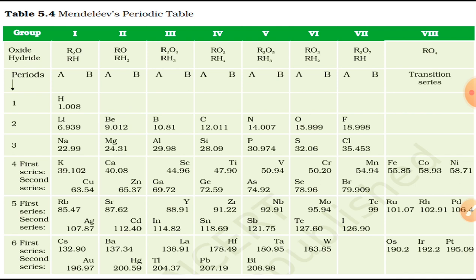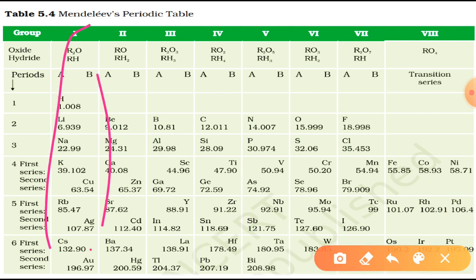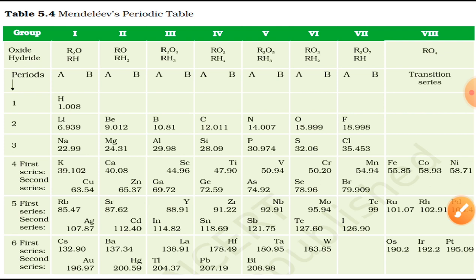He arranged 63 elements in increasing order of their atomic masses and found that there was a periodic reoccurrence of elements with similar physical and chemical properties. He observed that elements with similar properties fall in the same vertical column, and these vertical columns are called groups. The horizontal rows of these elements were called periods. On this basis, Mendeleev gave a periodic law: the properties of elements are a periodic function of their atomic masses.